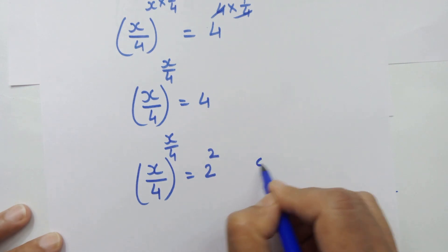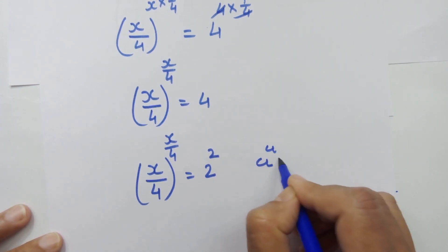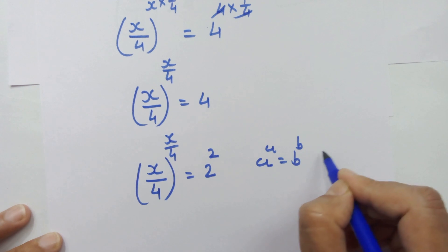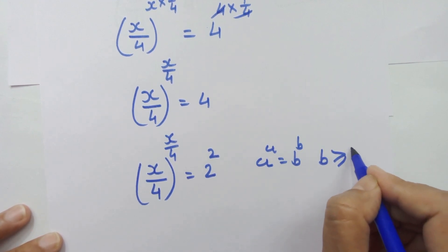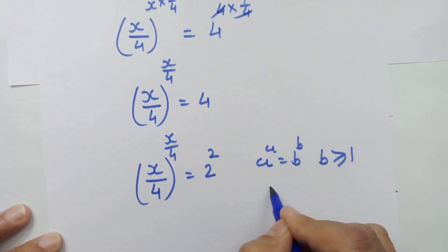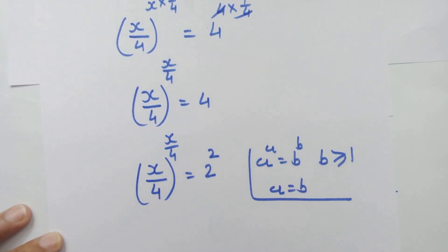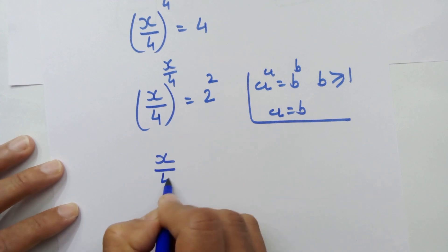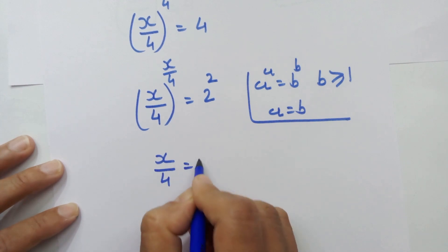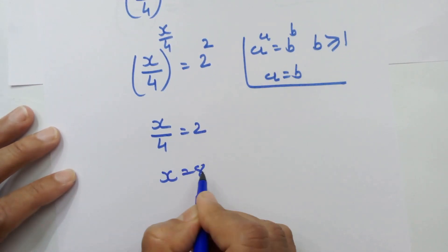Now if we have a raised to a is equal to b raised to b, and b is greater than or equal to 1, then we can equate a equal to b. By using this rule, we equate x upon 4 equal to 2, so x is equal to 8.